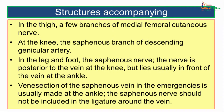The structures accompanying the great saphenous vein: in the thigh, a few branches of the medial femoral cutaneous nerve accompany the vein. At the knee joint, the saphenous branch of the descending genicular artery accompanies the vein. In the leg and the foot, the saphenous nerve accompanies the great saphenous vein — the nerve is posterior to the vein at the knee but lies usually in front at the ankle. Venisection of the saphenous vein in emergencies is usually done at the ankle, and the saphenous nerve should not be included in the ligature around the vein.